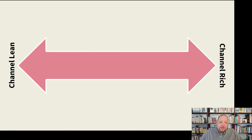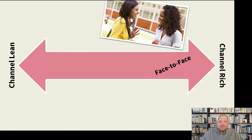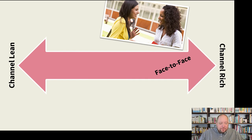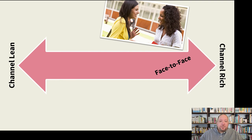For example, when we are face-to-face with somebody, that's incredibly channel rich. We have access to not only their words and the language they're choosing, but also their facial expressions, their tone of voice, what they're wearing, where we're talking, and what environment we're in when they choose to mention something. Face-to-face offers all kinds of channels and is very channel rich.